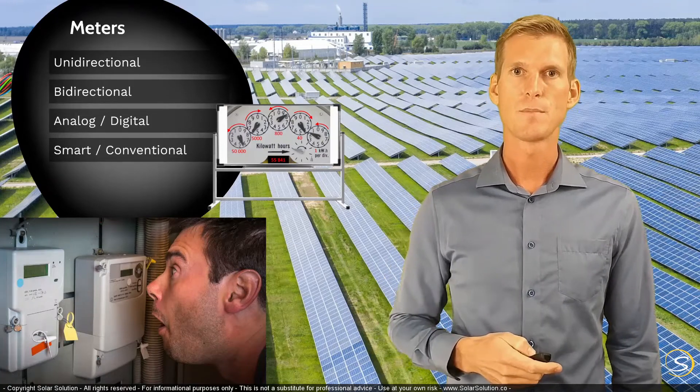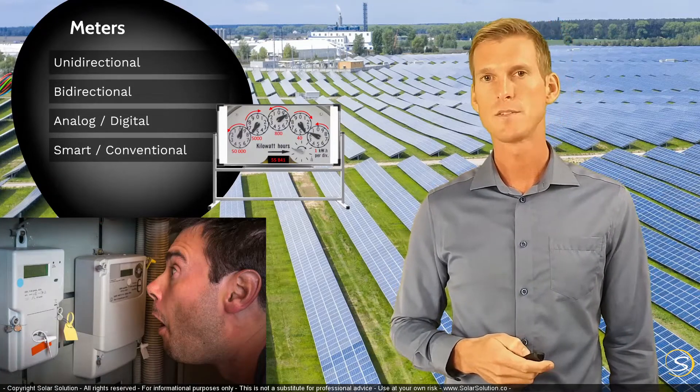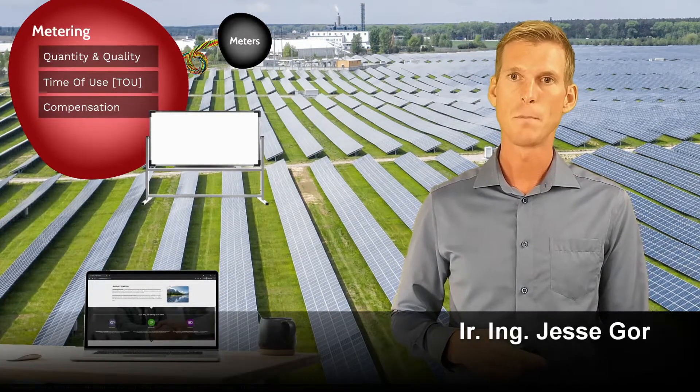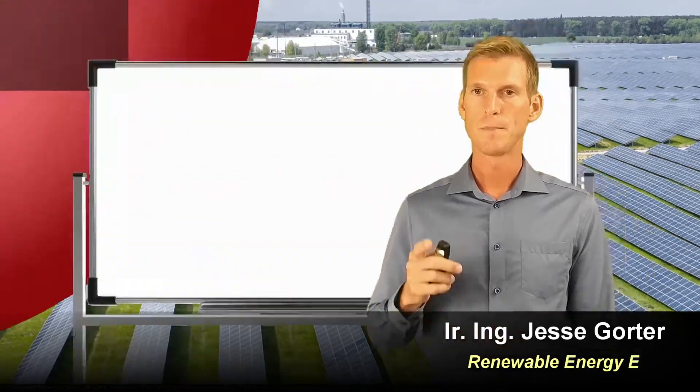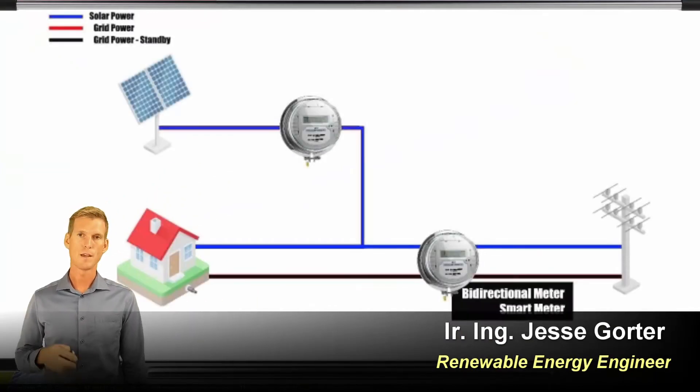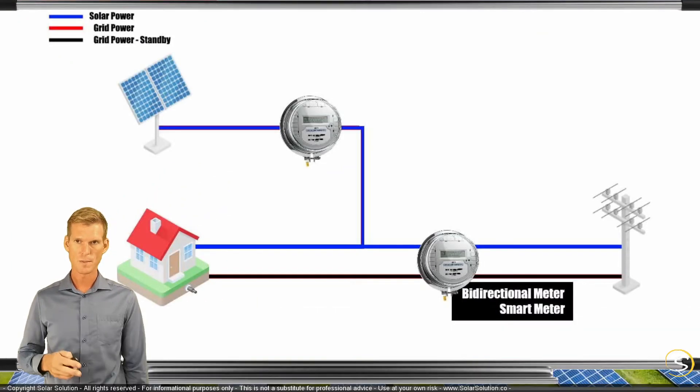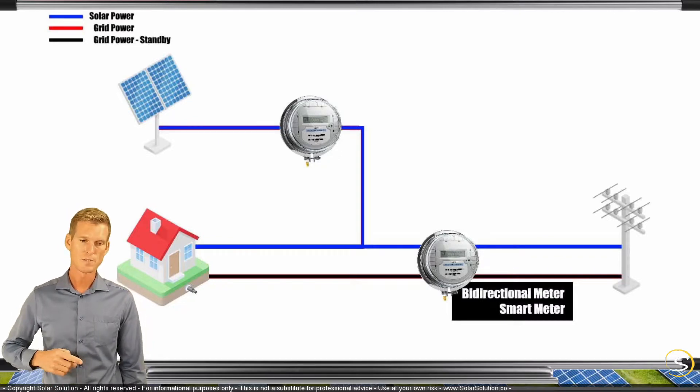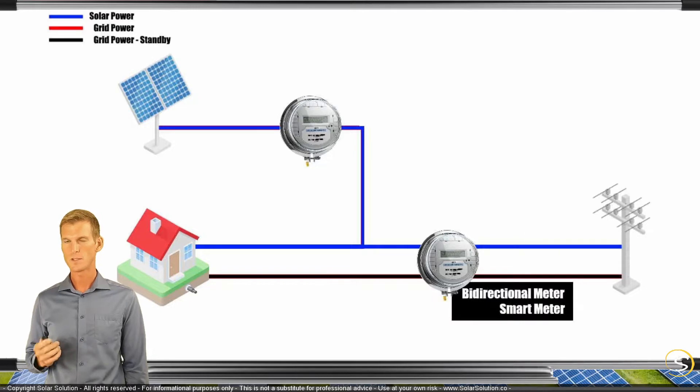So that was just a small sidestep on the meters. Let's go back to the whiteboard and look at a few of the different financial models available at the moment. This is a fairly simple setup where you have two different meters. There's one bi-directional meter which is between the grid and yourself, and that measures whatever is coming in or out.